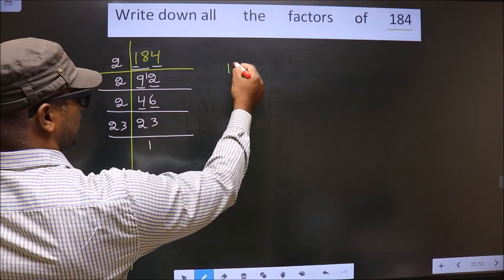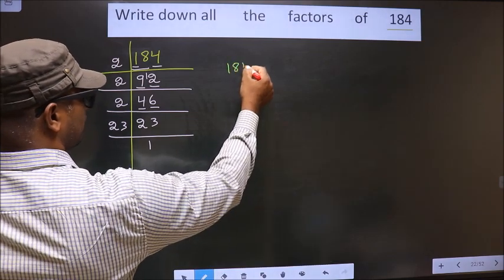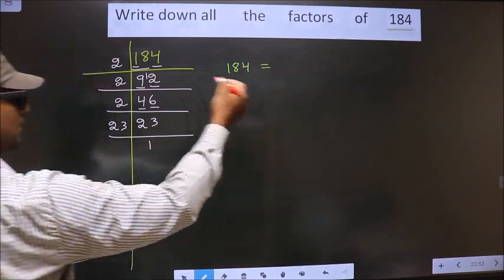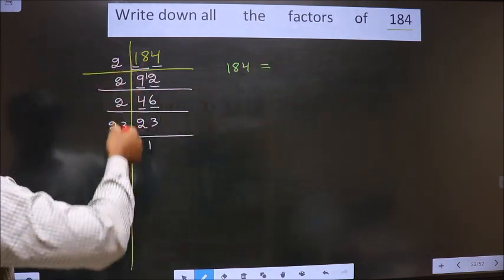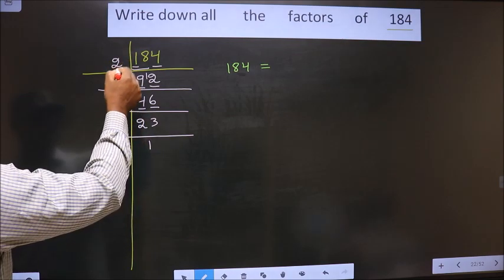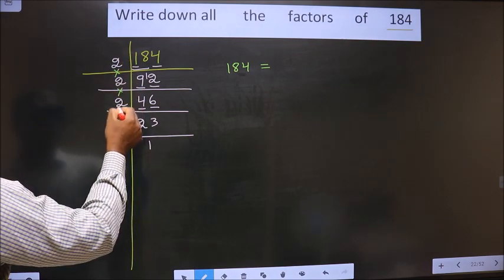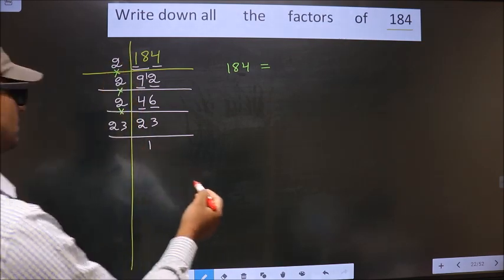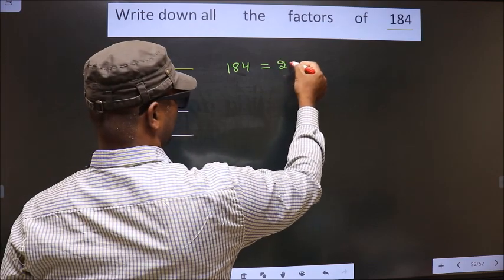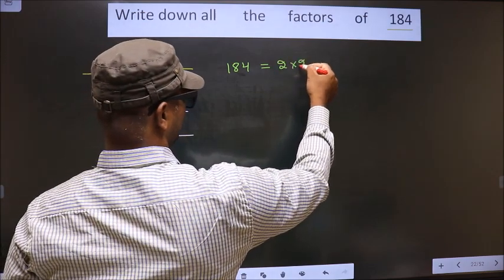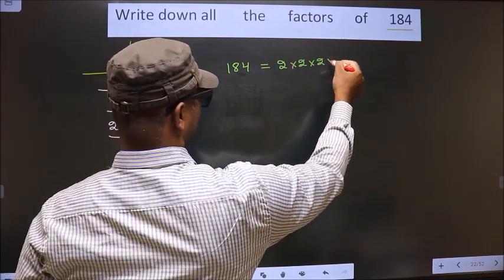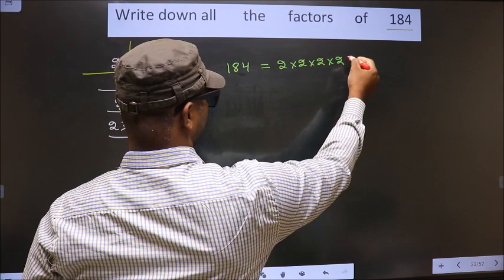So now 184 is equal to the product of these prime factors: 2 × 2 × 2 × 23.